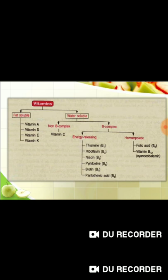The B complex vitamins involved in energy metabolism include thiamine B1, riboflavin B2, niacin B3, pyridoxine B6, biotin B7, and pantothenic acid B5. The hematopoietic B complex vitamins are folic acid B9 and vitamin B12.